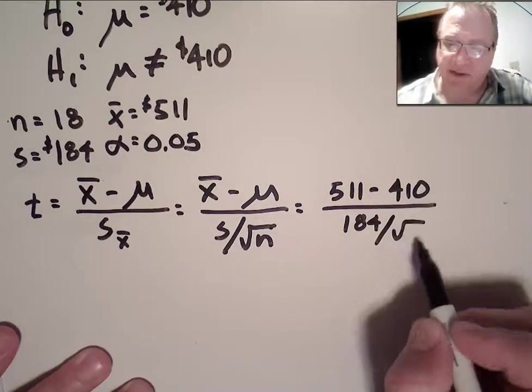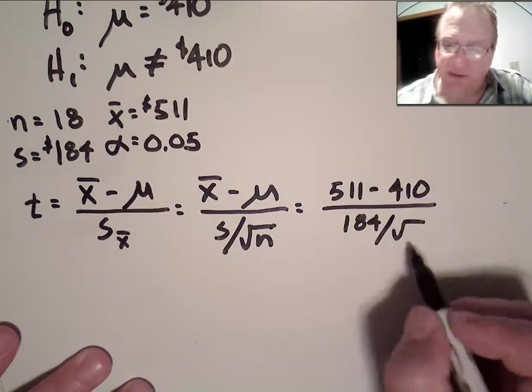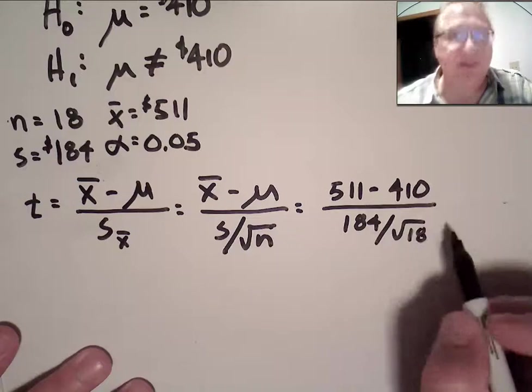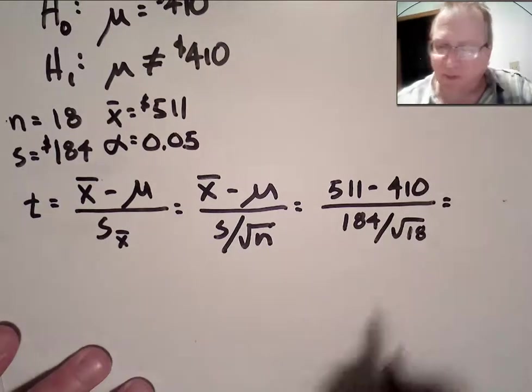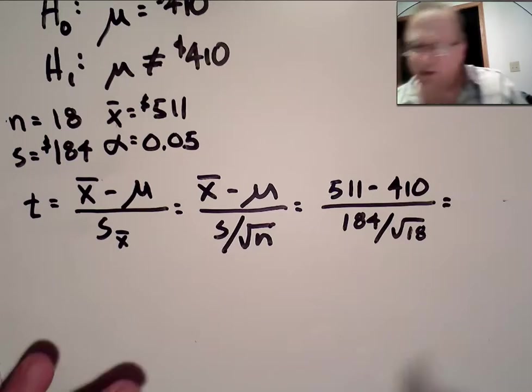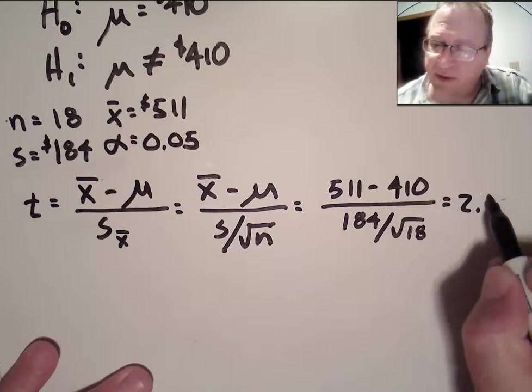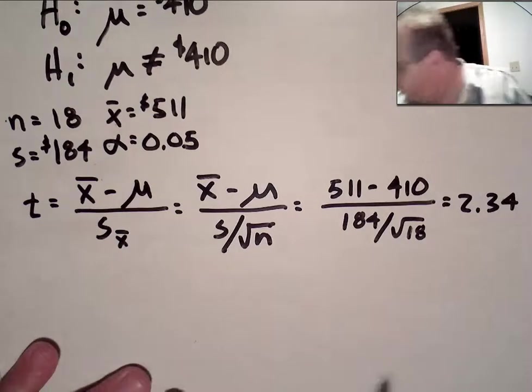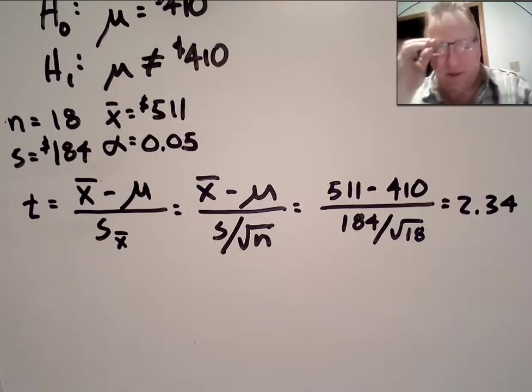divided by the square root of n, which is 18. And the book tells me that that's equal to 2.34. 2.34. Okay.